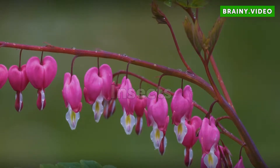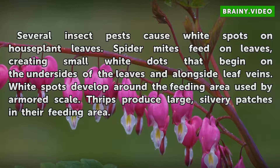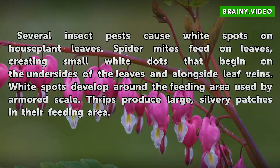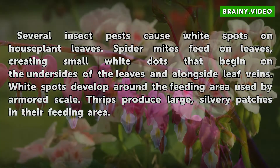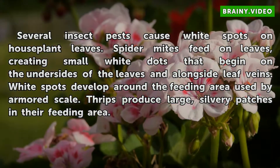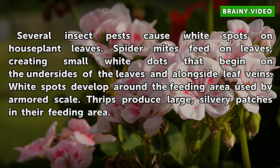Insects. Several insect pests cause white spots on houseplant leaves. Spider mites feed on leaves, creating small white dots that begin on the undersides of the leaves and alongside leaf veins. White spots develop around the feeding area used by armored scale. Thrips produce large, silvery patches in their feeding area.